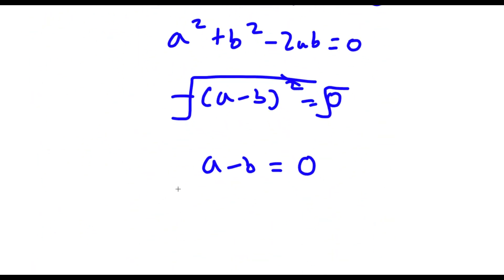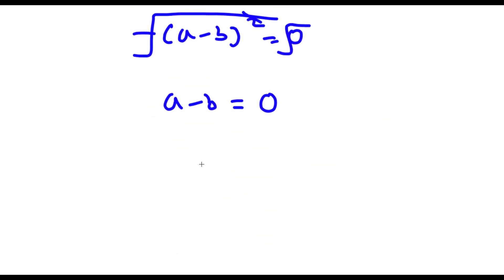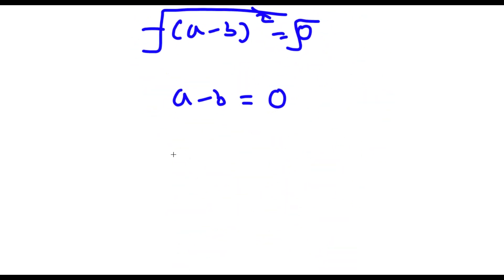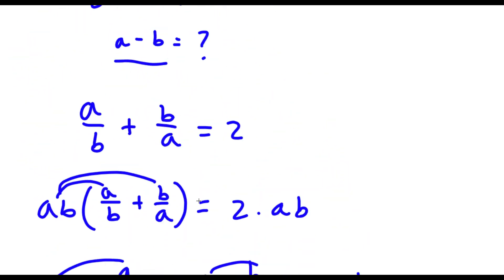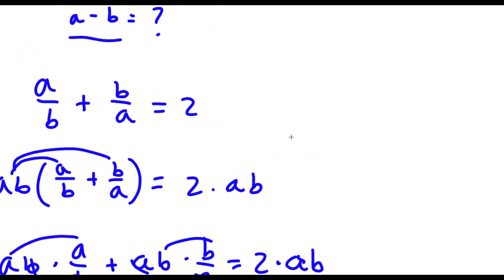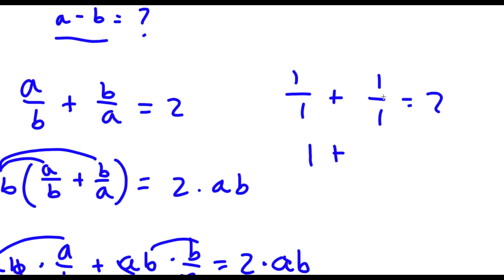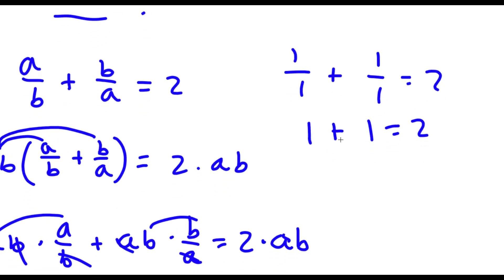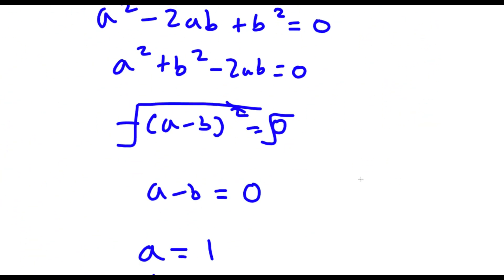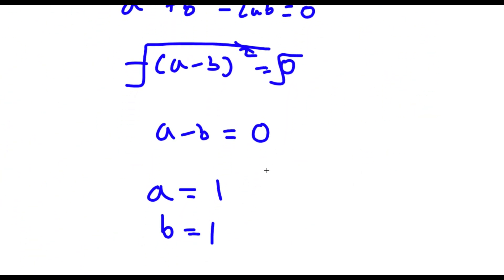So now to check, let's plug in two values of a and b. This could be anything — I'm just going to say a equals 1 and b equals 1. Our original equation was a over b plus b over a equals 2. Replacing a and b with 1, I get 1 over 1 plus 1 over 1 is equal to 2. 1 over 1 is 1 and 1 over 1 is 1 again — 1 plus 1 is 2, so I have 2 equals 2 and this is correct.